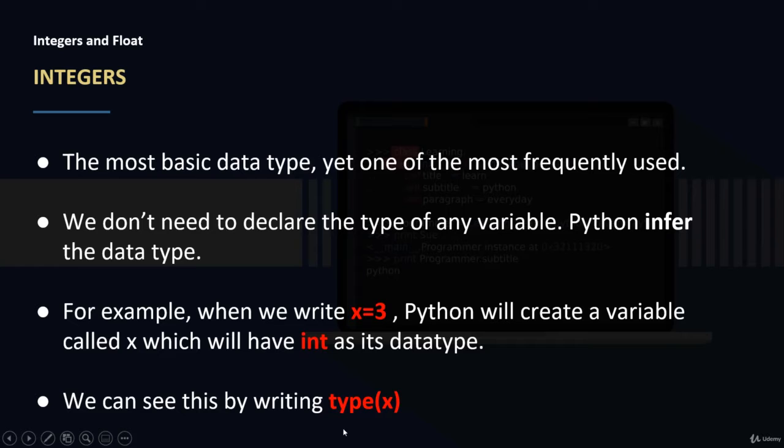Python will infer the data type itself and we can use a function called type. A function in Python is something that you give an input and it returns an output. We will have complete sections on functions, but for now, consider it as a black box that takes an input and returns an output.